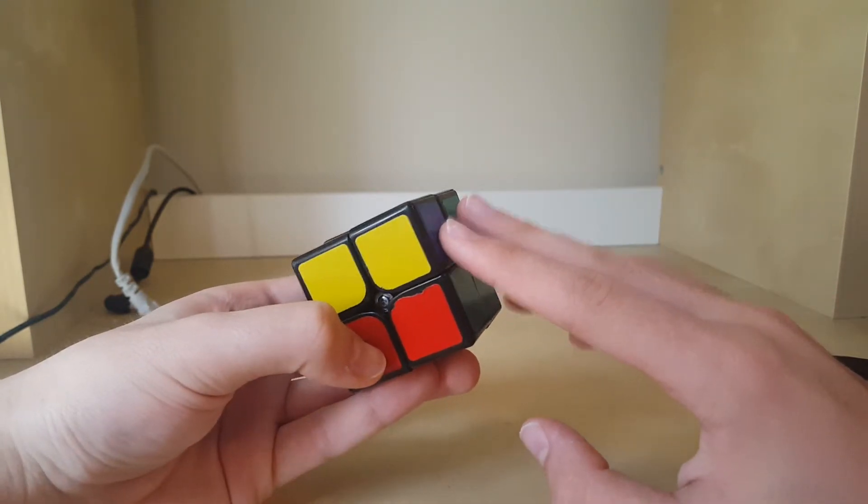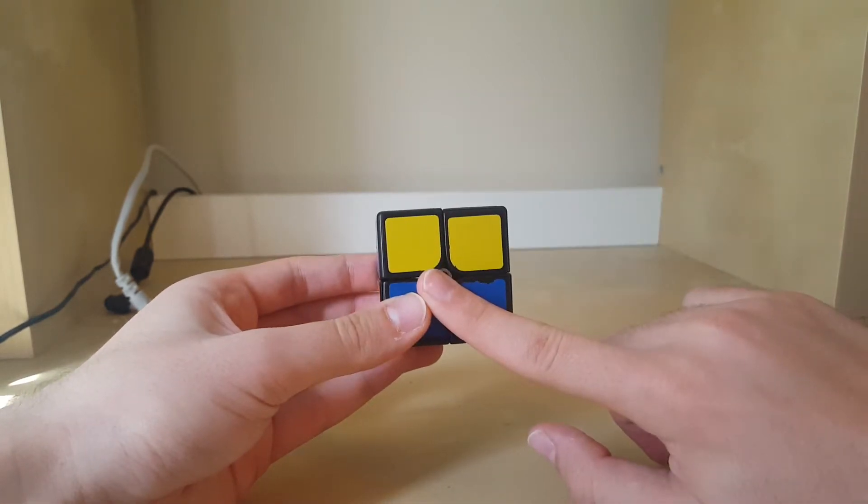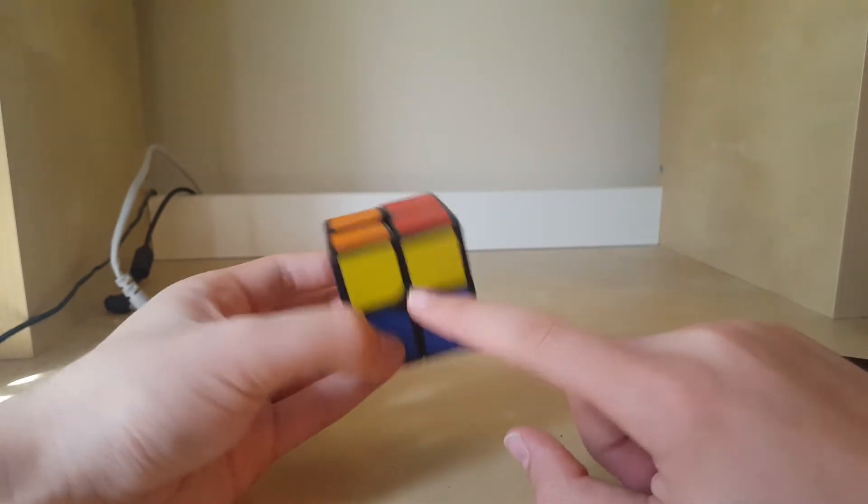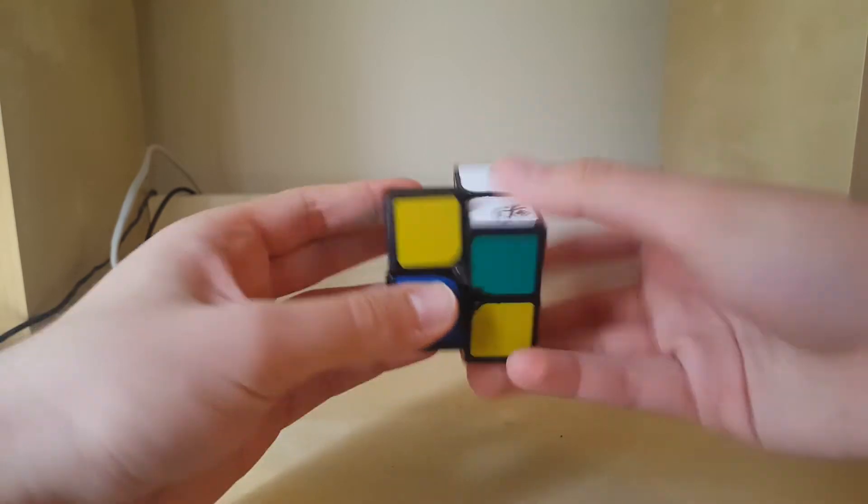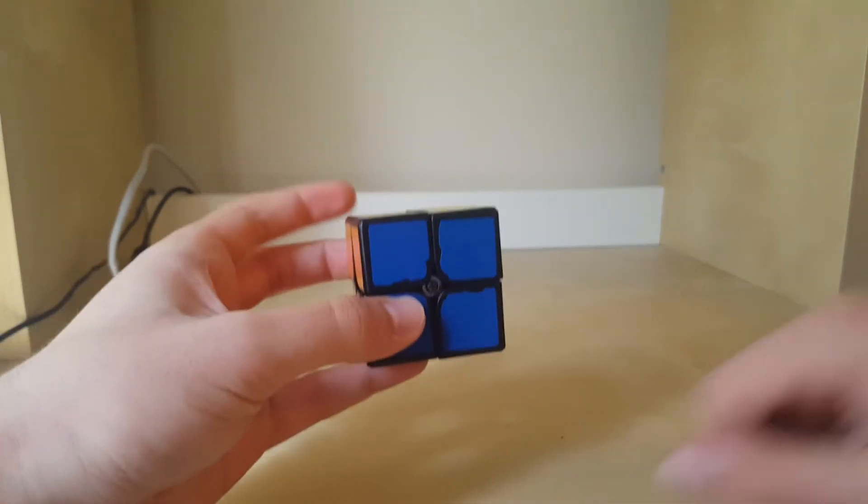And then you memorize where this ends up after you do the alg. So if it ends up on the right, then you have to do a U to get it to match with this red. But I know it ends up on the front, so if I would have blue in front, red's going to be here, and then I'd just do a U prime. So I'm just going to do the alg. So now it's red out in front, and then U prime, and that's the AUF.